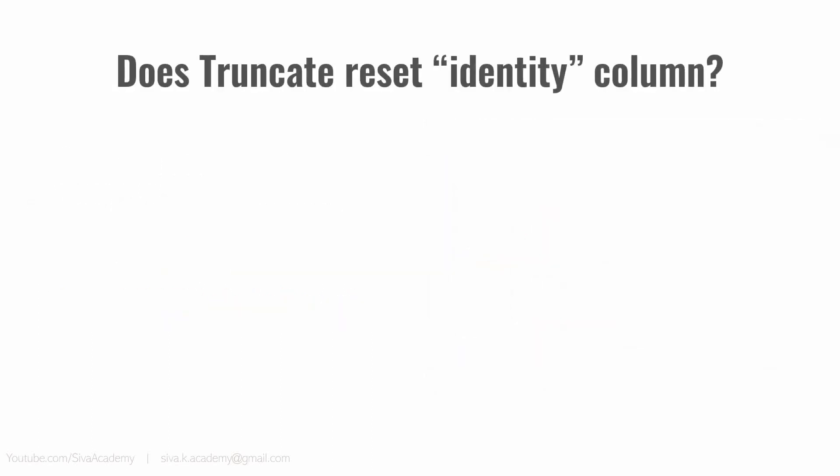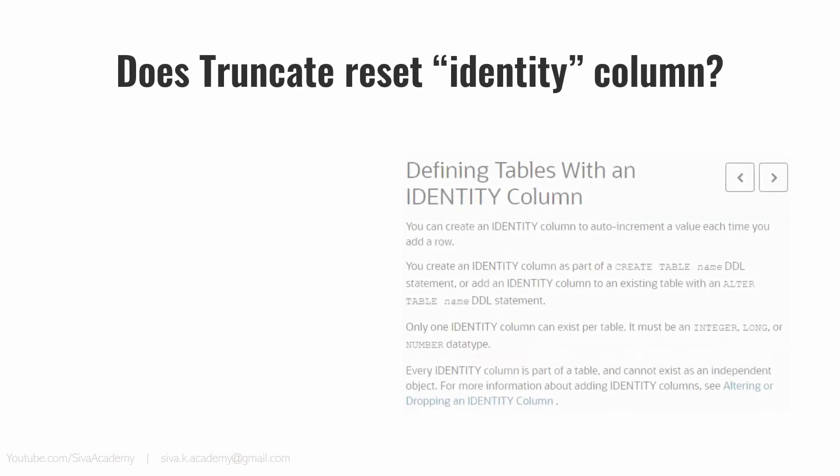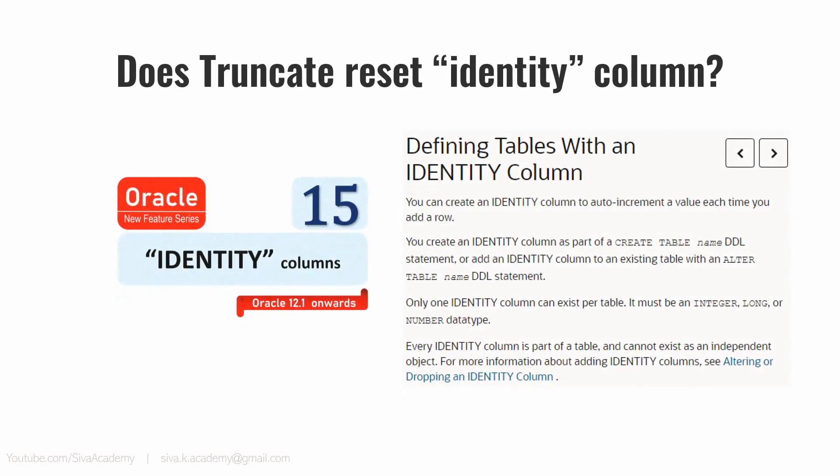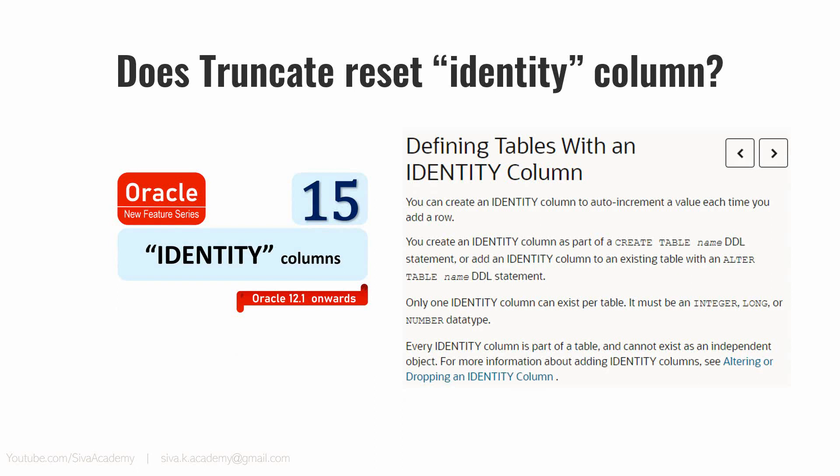Just to give you a quick introduction about what is an identity column: an identity column basically gives an auto-increment feature so that we don't have to explicitly insert a value for that column. Instead, whenever we insert a value for the rest of the columns, Oracle will automatically provide a value to the identity column.